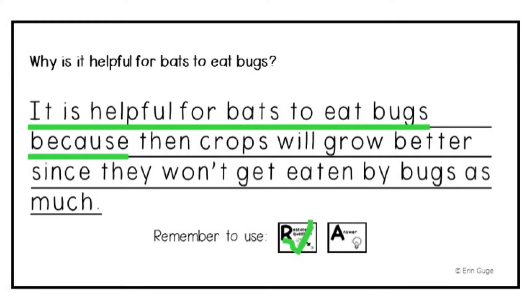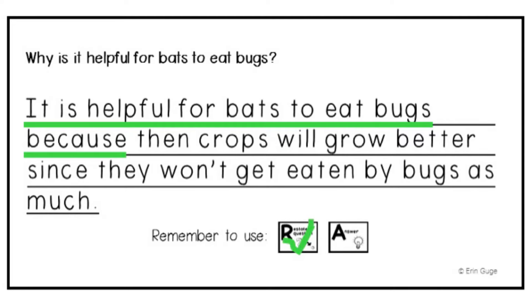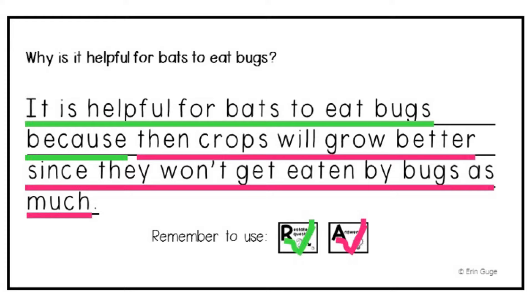So we underline that in green and check off that we have the R for restate the question. Then we need the A. Is there a correct answer next? Let's see. It says it is helpful for bats to eat bugs because then crops will grow better since they won't get eaten by bugs as much. Yes, that tells why it is good that bats eat bugs. So we underline it in pink and check off that we have the answer.